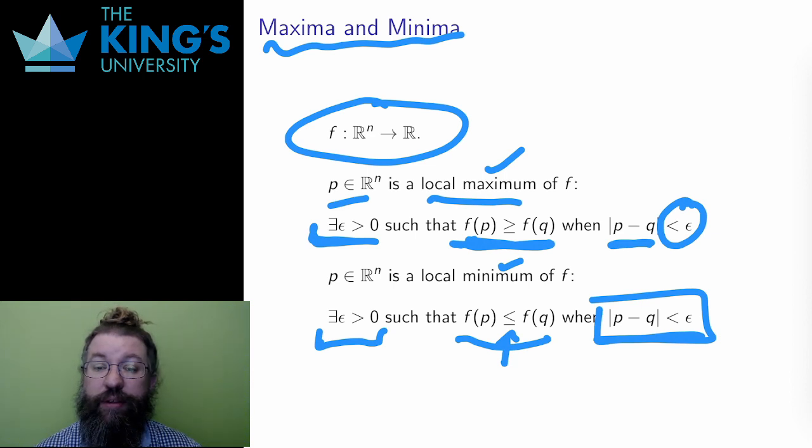In single variable calculus, there were minima, maxima, and there were unclassifiable critical points, like the point zero zero on the graph of the cubic. In higher dimensions, there is a greater variety of extrema. Having more than one direction in the domain, more than one dimension, means that extrema with different behaviors in different directions are possible, and that leads to the next idea.